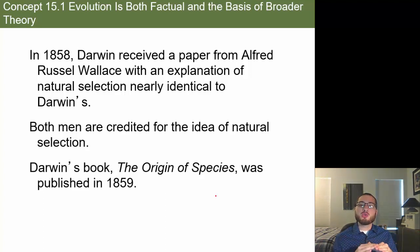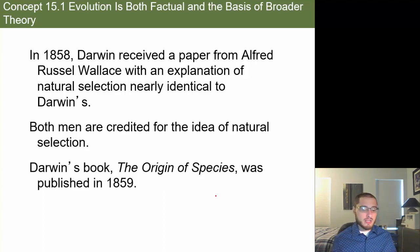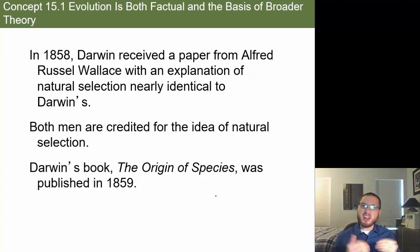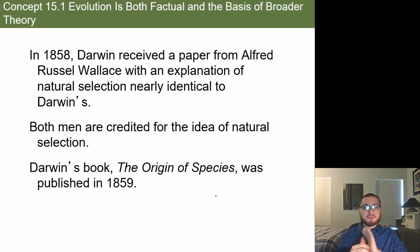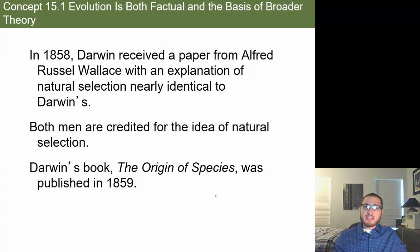In 1858, almost 30 years after the Beagle voyage, Darwin still hadn't come out with his theory of evolution because he didn't want to ruin his reputation. He was building his name as a great naturalist but feared going against the Catholic Church — it could ruin his entire career.